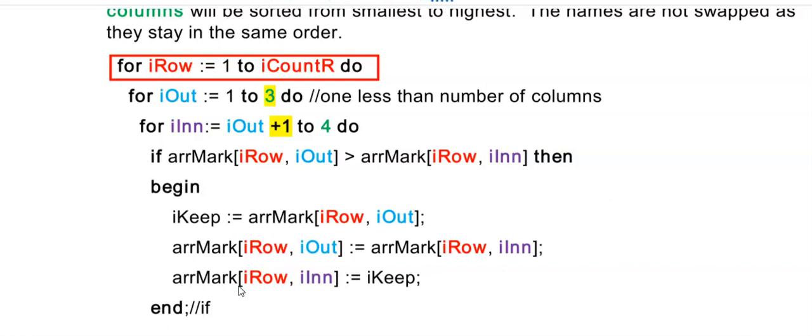I'm not swapping the names around because the names stay in the same place. The row stays the same. I'm just sorting the columns from lowest to highest or highest to lowest depending on what you put there.